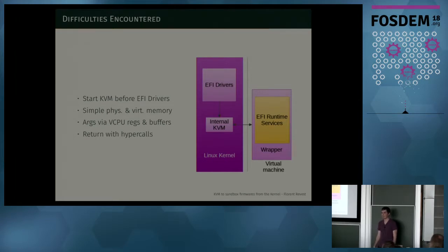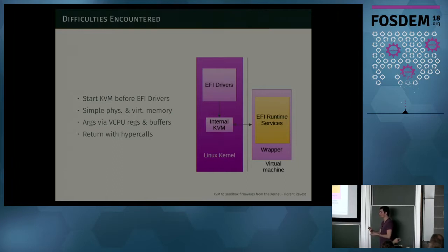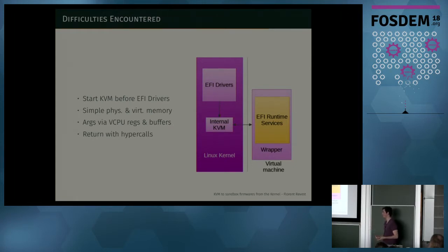Just one virtual machine is spawned at boot time, and all EFI function calls go into that same virtual machine. Regarding how to know which hardware resources to map: the EFI standard gives you a mapping — it tells you it needs a certain range of memory as a device with write access, execute access, and so on. I go through this structure and adapt the page tables of the virtual machine according to the information EFI provides. Thank you very much.